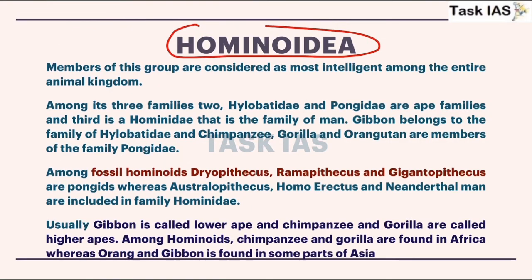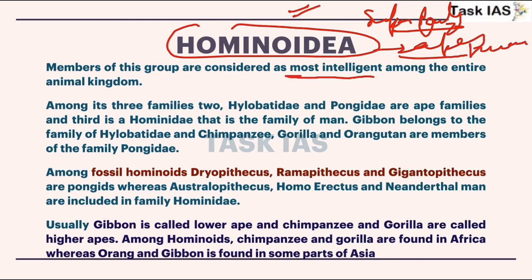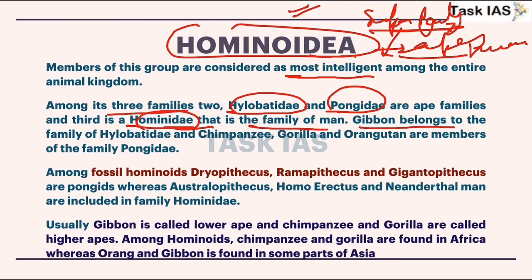Now we have discussed features of prosimians as well as anthropoids. Now Hominoidea — this is the super family under anthropoids, and it includes apes and humans. These are considered as the most intelligent individuals. This super family has three families: firstly Hylobatidae, second is Pongidae, and third is Hominidae. Note the difference between Hominoidea and Hominidae.